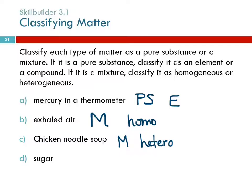How about sugar? Pure substance. Is it an element or a compound? It's a compound. You're not going to find sugar on the periodic table. Table sugar is sucrose — it has a particular chemical formula. It's a combination of hydrogen, oxygen, and carbon in a particular arrangement.